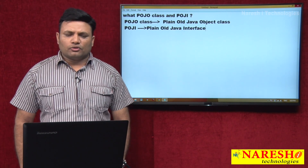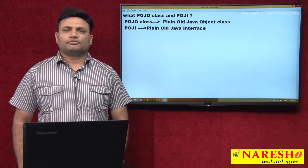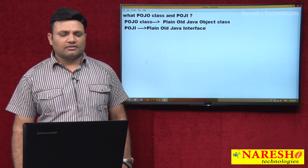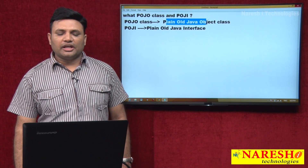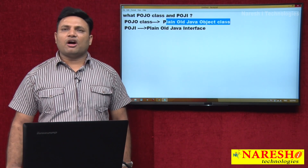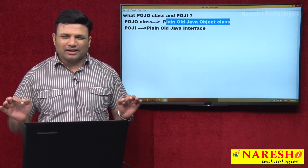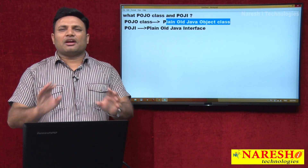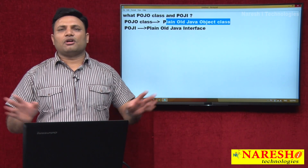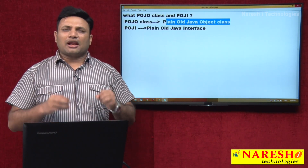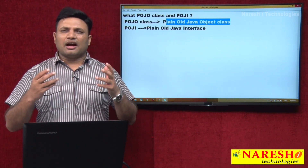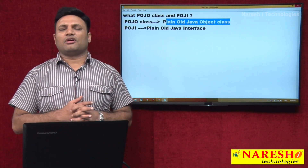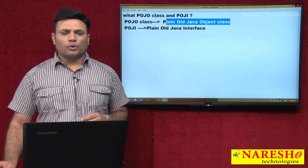What is POJO class? What is POJI? First let me explain what is POJO class. POJO class means Plain Old Java Object class. A normal class without any specialities is called POJO class — an ordinary class, a simple class without any specialities.